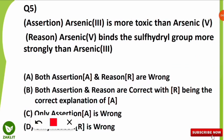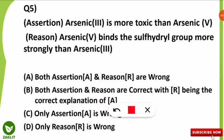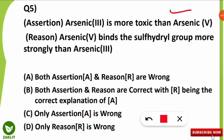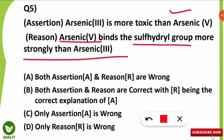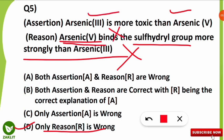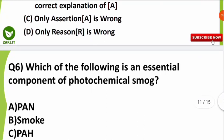The next question was an assertion and reasoning type: the assertion stated that arsenic-3 is more toxic than arsenic-5, and the reason stated that arsenic-5 binds the sulfhydryl group more strongly than arsenic-3. The correct option is D — only the reason statement is wrong. Arsenic-3 being more toxic than arsenic-5 is correct, but arsenic-5 does not bind the sulfhydryl group more strongly — it is arsenic-3 that has greater binding strength with the sulfhydryl group.